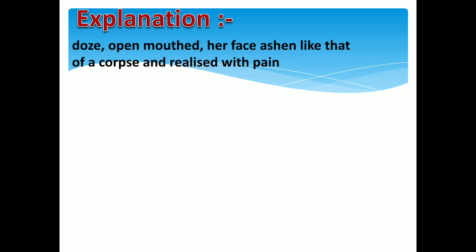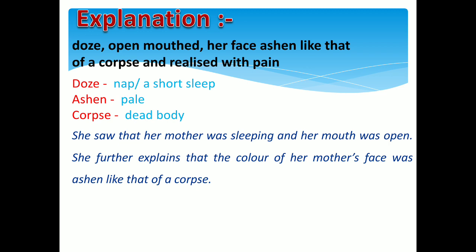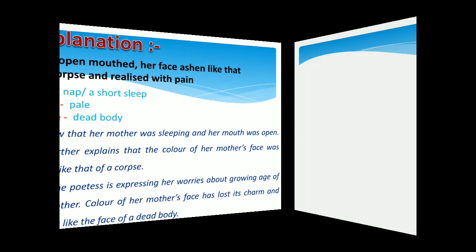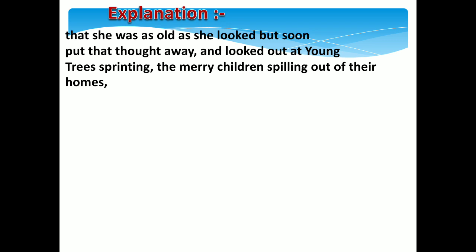She looked at her mother. The poetess says: 'her face ashen like that of a corpse.' She saw that her mother was sleeping and her mouth was open. She further explains that the color of her mother's face was ashen like that of a corpse — meaning a dead body. Here the poetess is expressing her worries about the growing age of her mother. The color of her mother's face had lost its charm and looked like the face of a dead body.